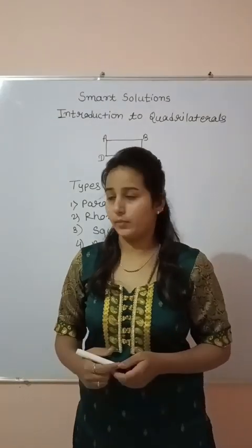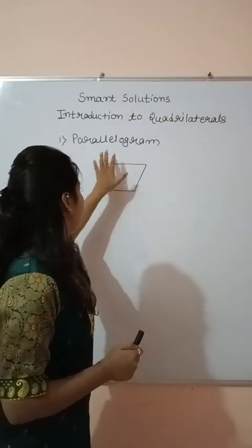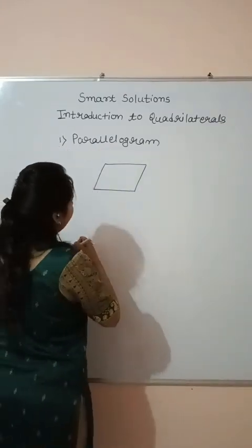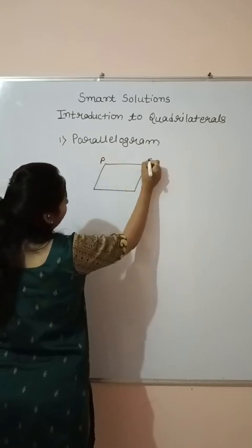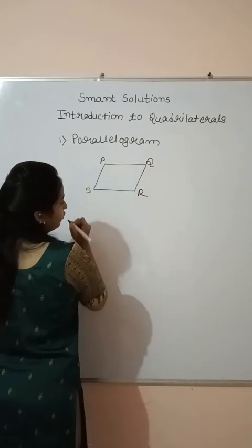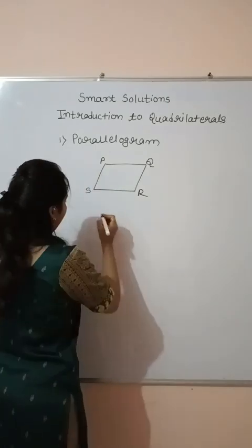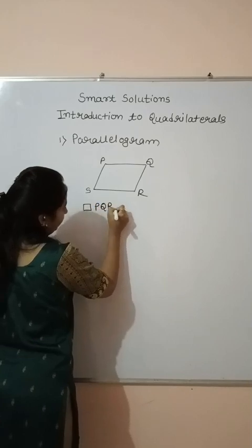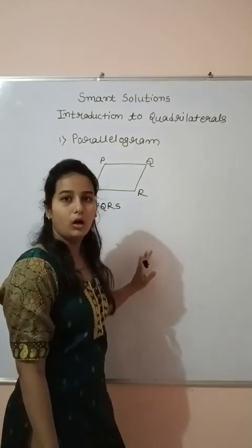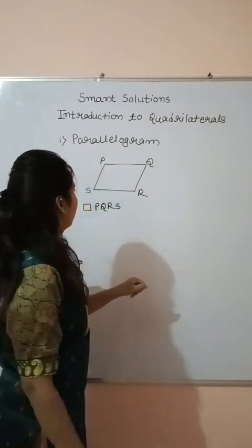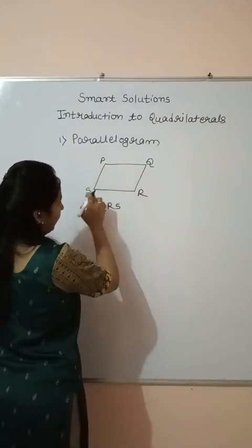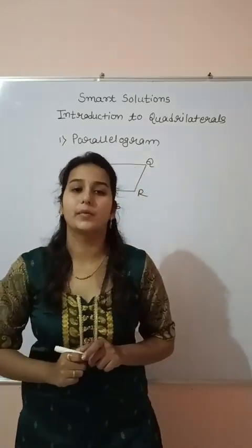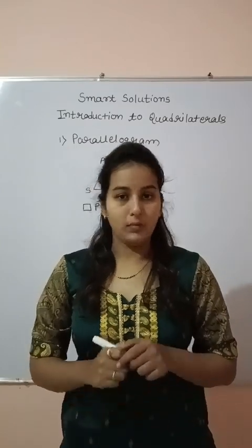So we will learn the first type, that is the parallelogram, and the properties of the parallelogram. This is the parallelogram and we will name it P, Q, R, S. So what are the properties of the parallelogram? See, side PQ and side SR — these are equal sides. The first property of the parallelogram is: opposite sides of the parallelogram are equal.